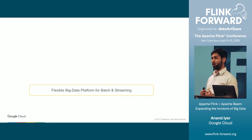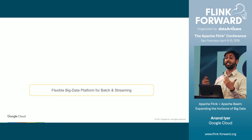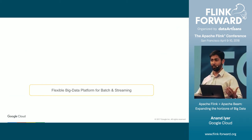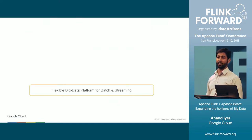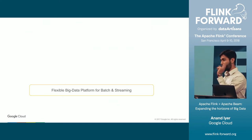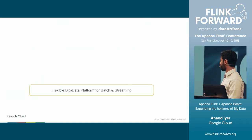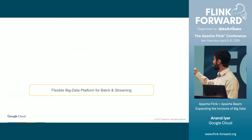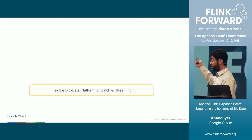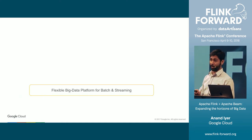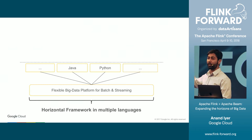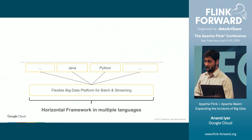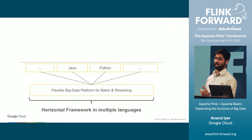Now let's talk about what the communities are focusing on today, which is extending the reach of big data processing, expanding the horizons of big data, and making it accessible to newer audiences. We're doing that in two ways. First, we want to take a flexible and powerful big data batch and streaming framework like Flink and make it available in multiple different programming languages.